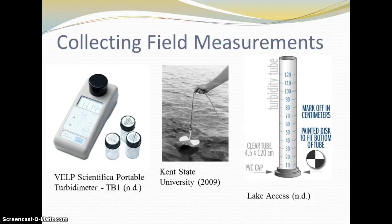To ensure accuracy, the outside of the vial should be clean and free of anything that may refract light, such as smudges, scratches, lint, water, or fingerprints. Use kim wipes — non-lint laboratory cloths — to clean or dry the sample vial before placing it in the turbidimeter.